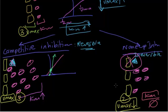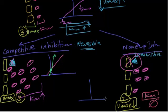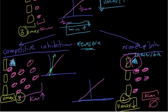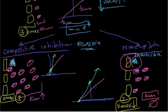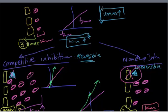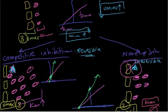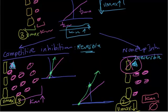Now draw the chart for non-competitive inhibitors: the KM comes from the same point as the control, while the Vmax is decreased. Remember, Vmax increases going from up to down — so a decreased Vmax means the curve sits higher on the graph. The non-competitive inhibitor curve appears above the control curve.